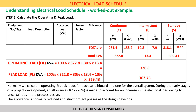Based on the formula discussed, we can now calculate the operating and peak loads. In our example, the operating load works out to 326.8 kVA and the peak load works out to 362.76 kVA. We normally calculate the operating and peak loads for each switchboard and one for the overall system. During the early stages of project development, an allowance of 10 to 20% is made to account for an increase in electrical load, to take care of uncertainties in the process design. This allowance is normally reduced at distinct project phases as the design develops and the details of the electrical loads are crystallized.